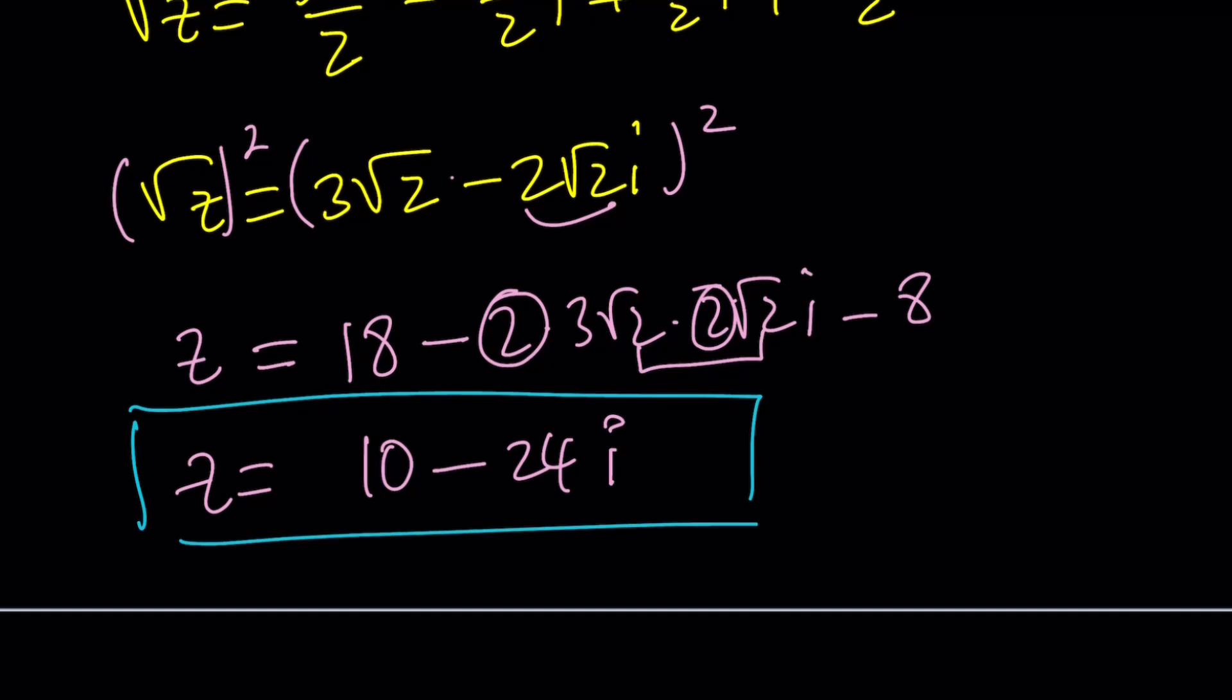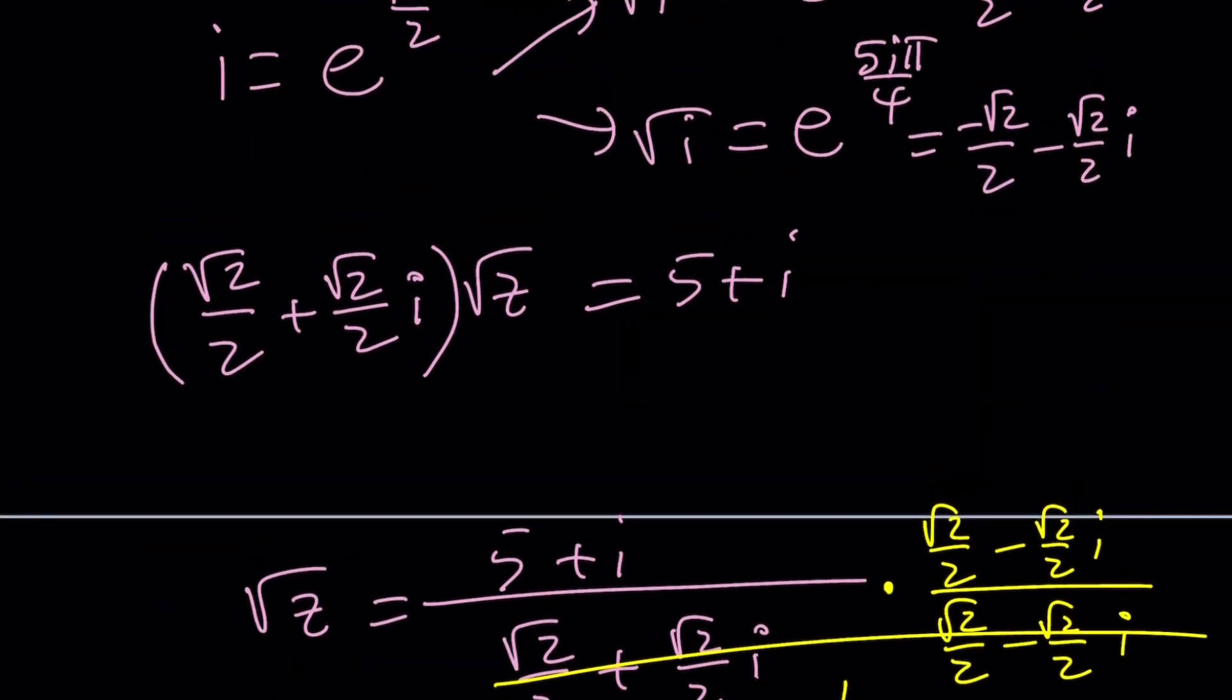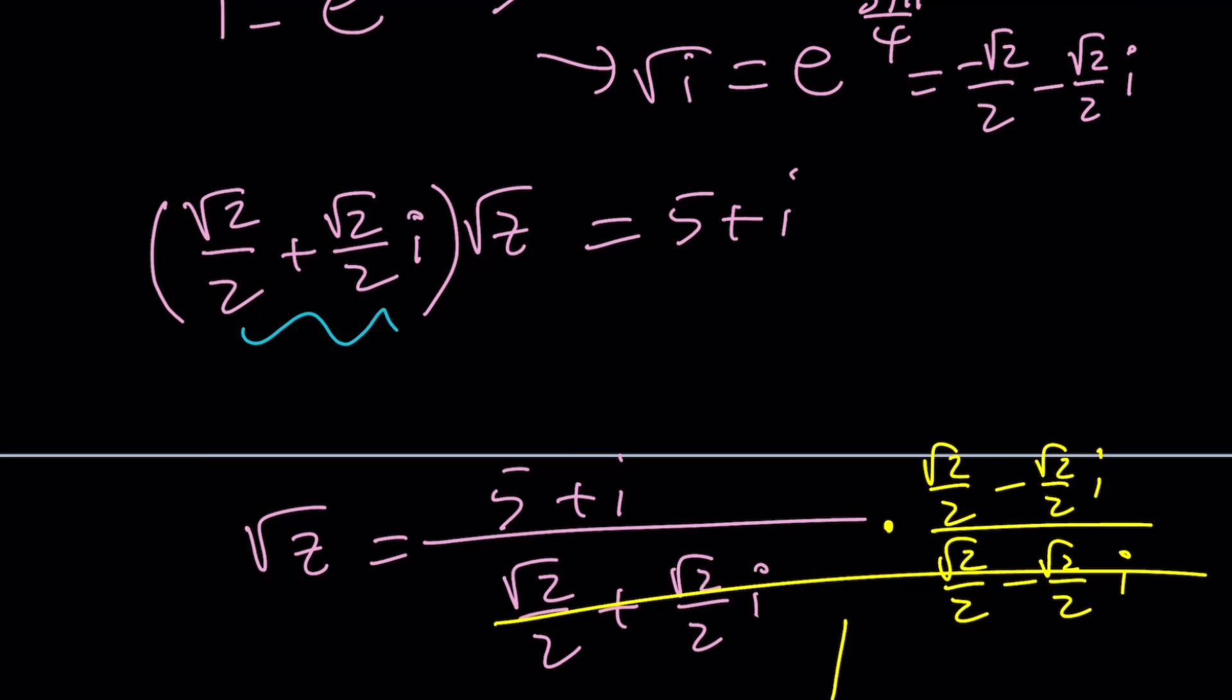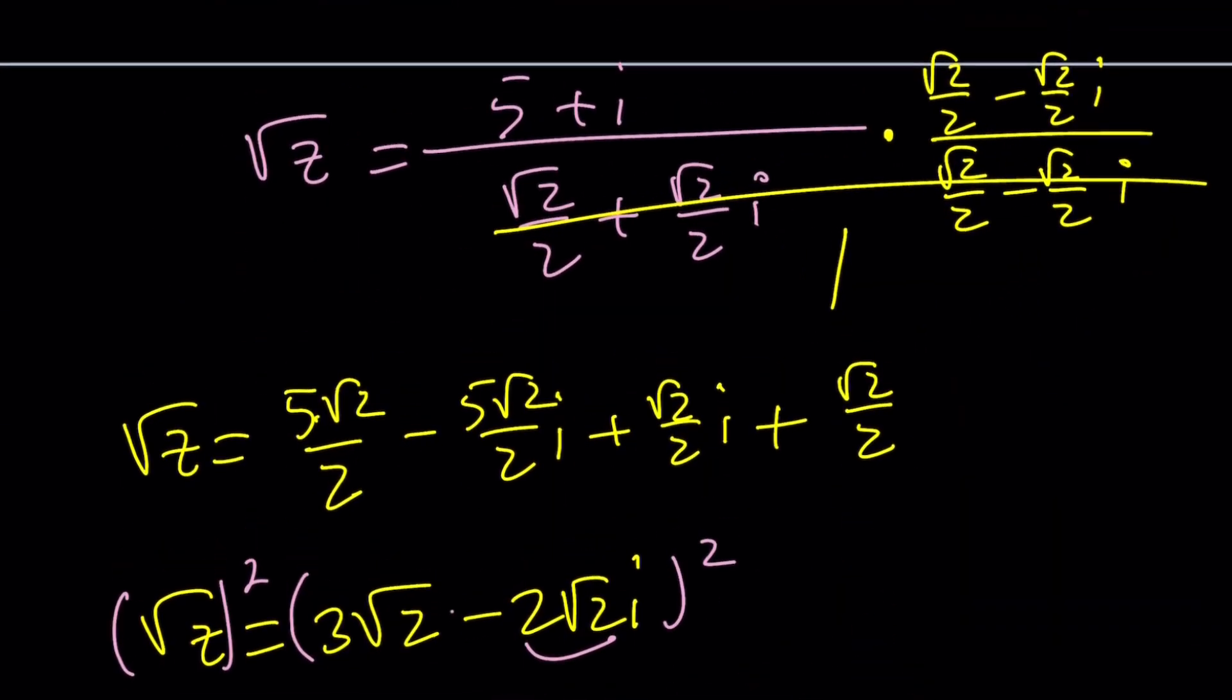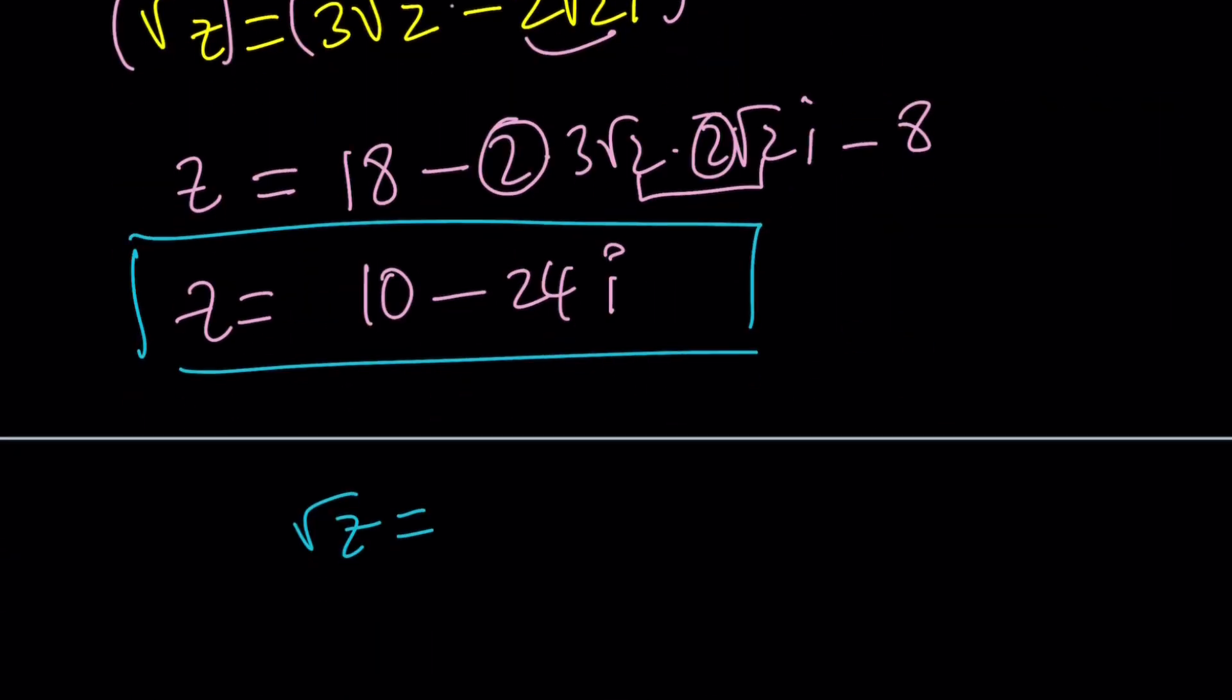And of course, you should get the same answer. Now, if you go ahead and use the other square root, what happens? Because there are two square roots of i, and both of them should be valid. Now, here's what happens. If you take the opposite of this number, when you square both sides, it is going to give you i again. So when I squared this number, why didn't I get i? Because I didn't square it. So here's another approach that you can use without going into the conjugate thingy.